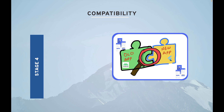Stage four is compatibility, and it is very critical. You have to make sure your older app is compatible with your newer app. Your older app might be in Android and your newer app in Flutter, but it should look very similar. If a user finds that the migrated app looks very different or you've changed the user experience, they are definitely not going to love that.